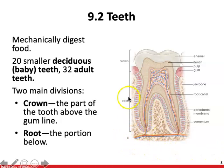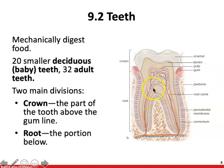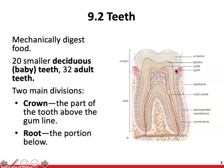Periodontal membranes anchor the tooth to the jawbone and help hold our teeth in place. Two homeostatic imbalances associated with the teeth and mouth are dental caries — tooth decay or cavities — which occur when bacteria metabolize sugar and produce acids that erode the enamel. This can be very painful if decay reaches the pulp and its nerves. There is also gingivitis, which is inflammation of the gums that can spread to the periodontal membrane, causing the loosening of teeth.